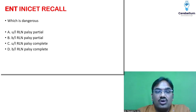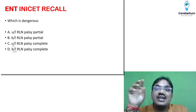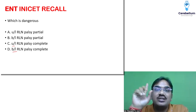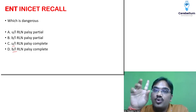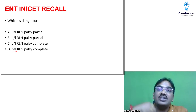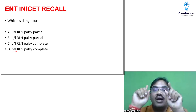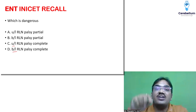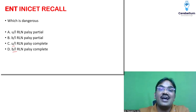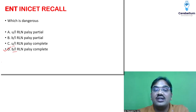In bilateral complete RLN palsy, both vocal cords are paralyzed. The RLN supplies the only abductor of the larynx — the posterior cricoarytenoid. While breathing, the vocal cords should abduct to open the airway. If bilateral complete RLN palsy is present, the vocal cords will not abduct; the patient will land in sudden gasping respiratory distress and emergency tracheostomy is required.